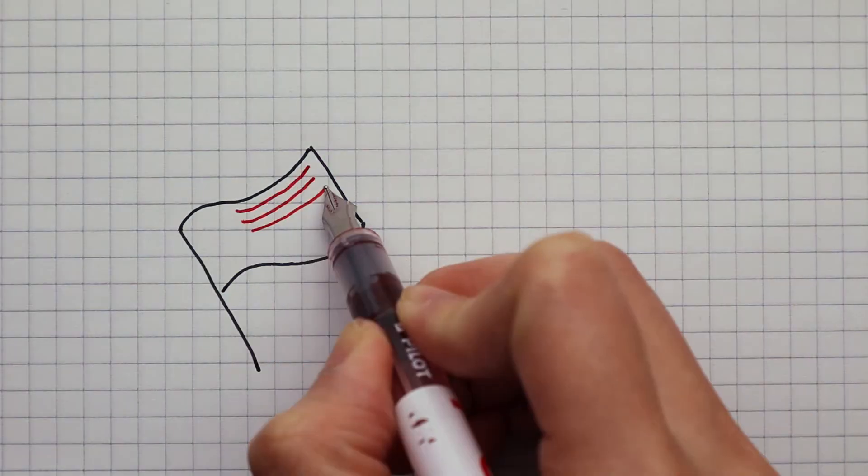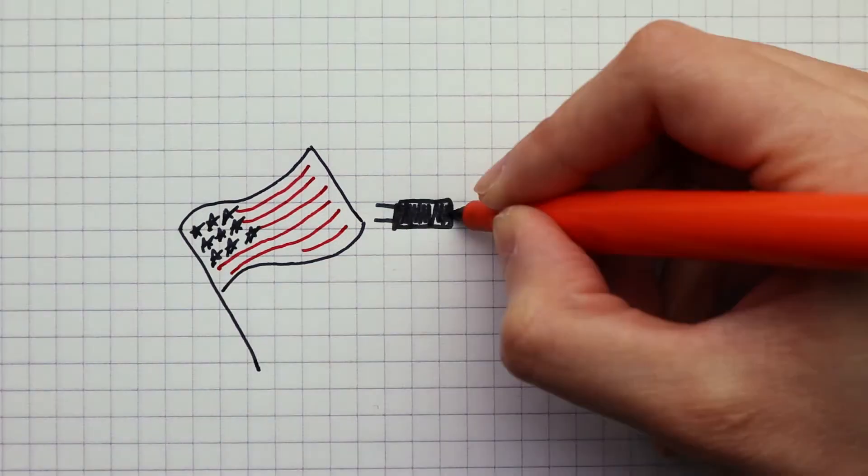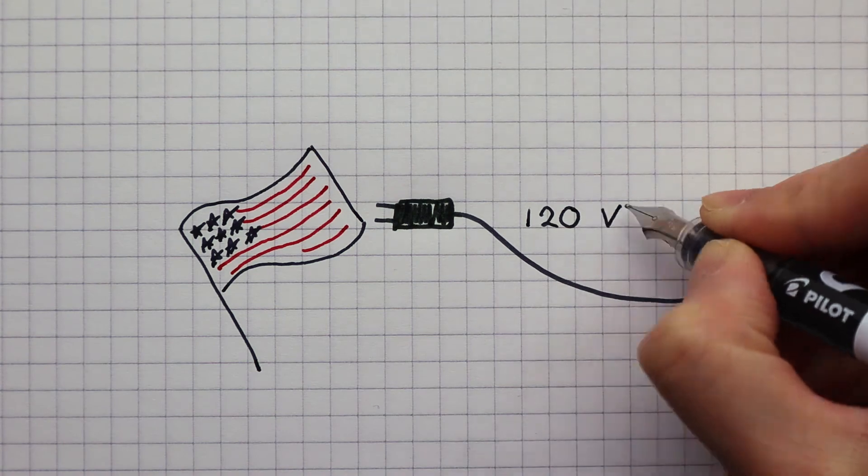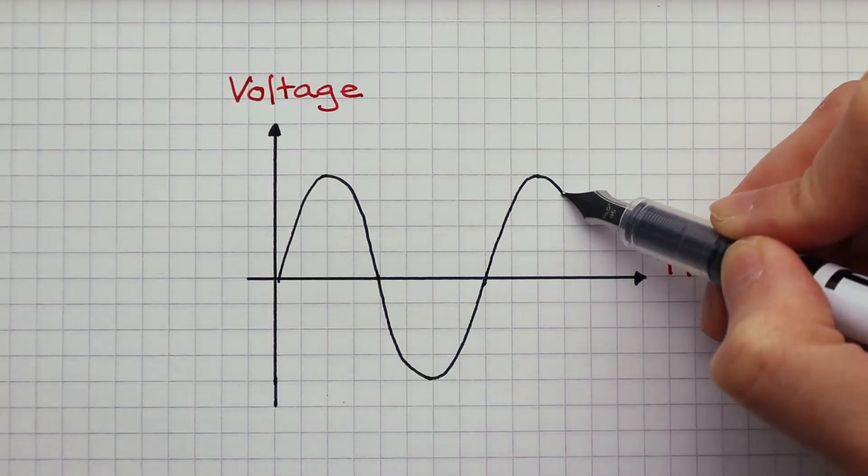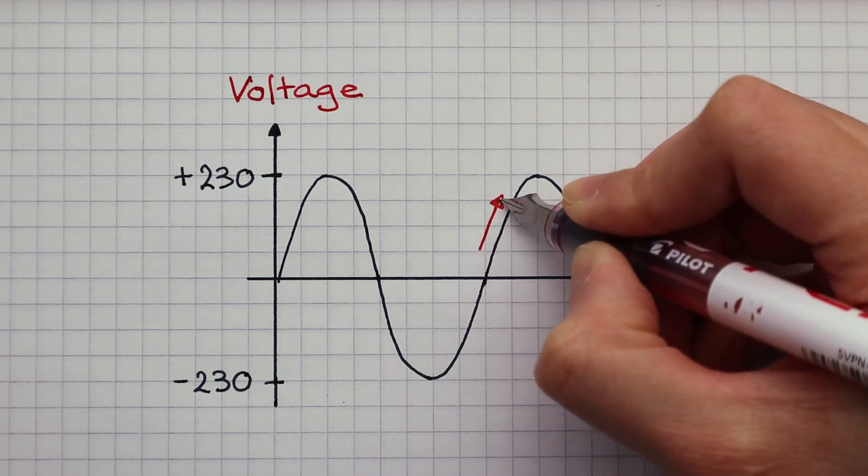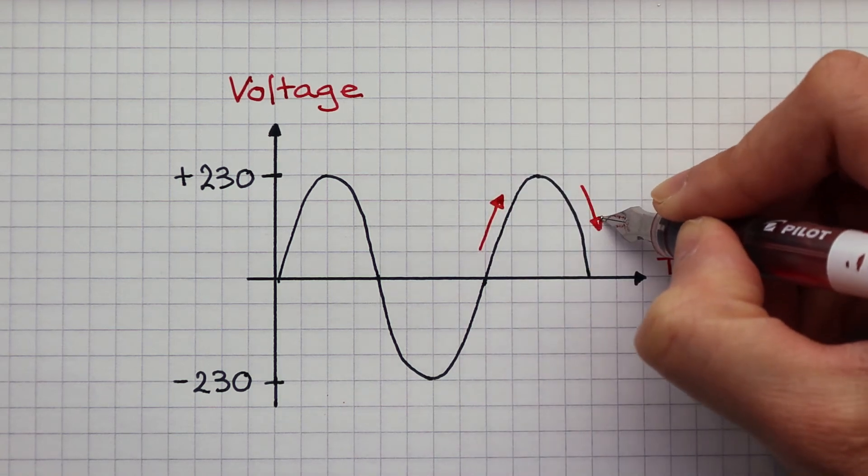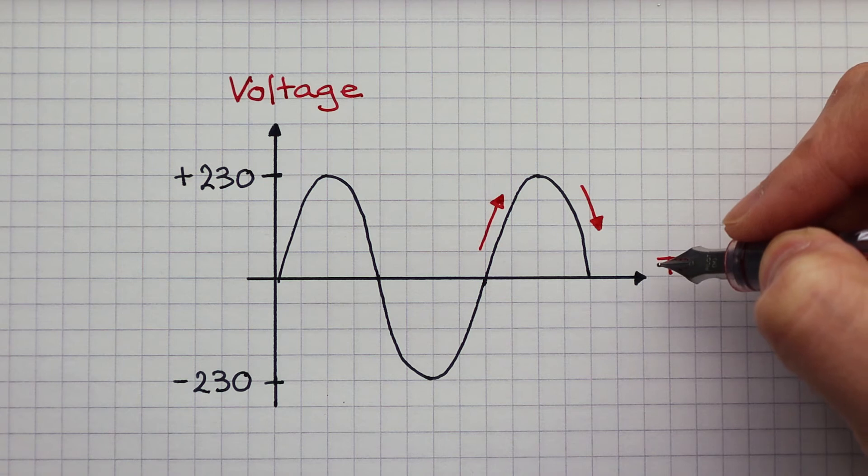In the United States, the mains voltage is much lower, 120 volts. To represent the AC current on the voltage time graph, the voltage rises and falls. This shows that the current is going forwards and backwards.